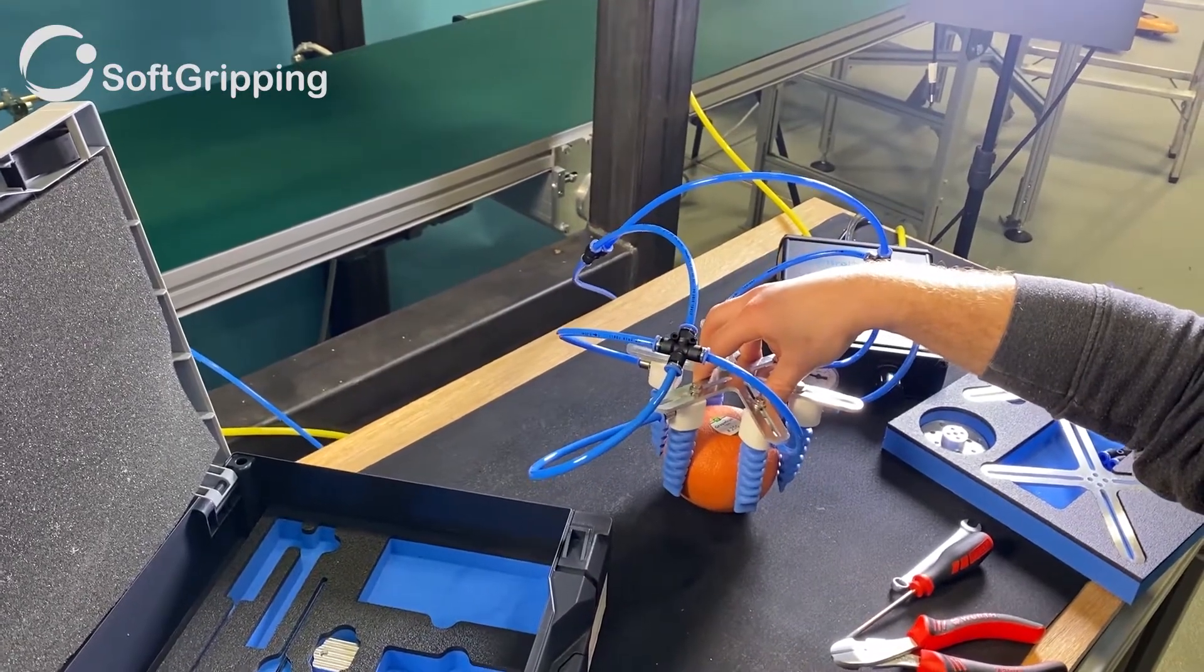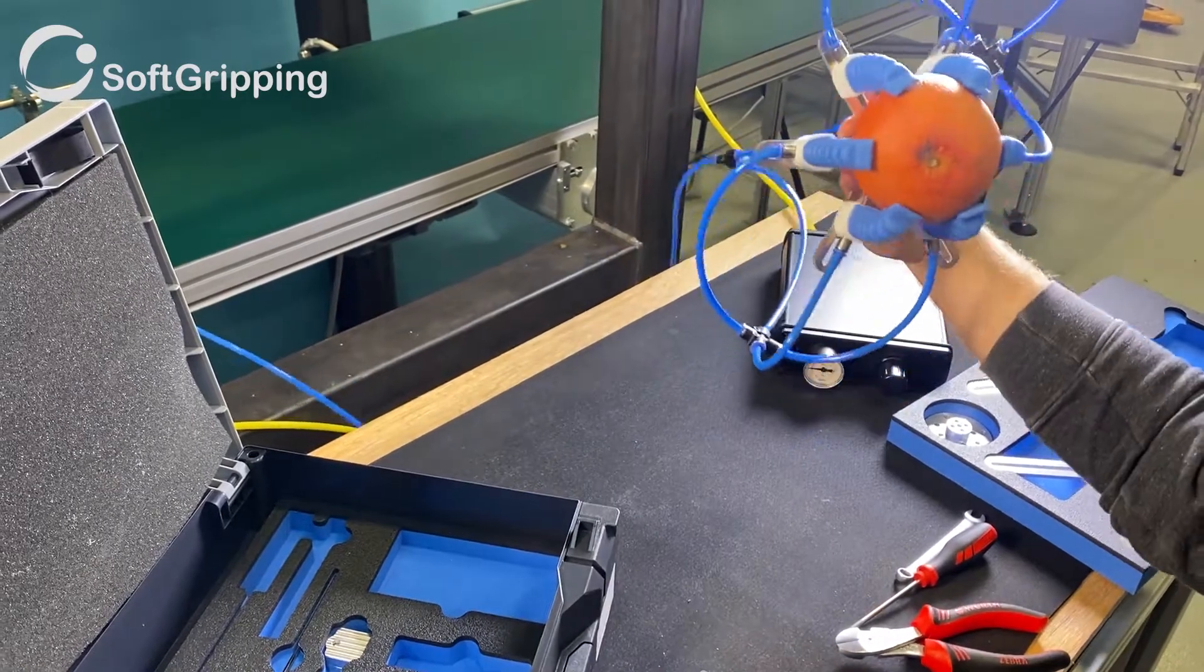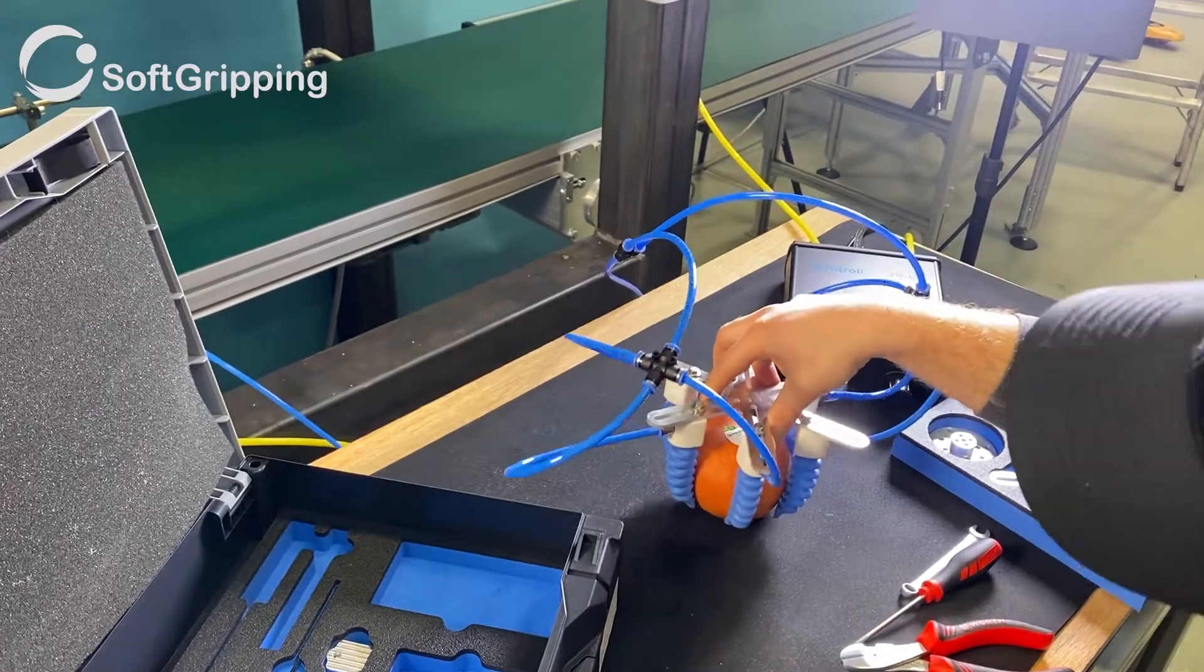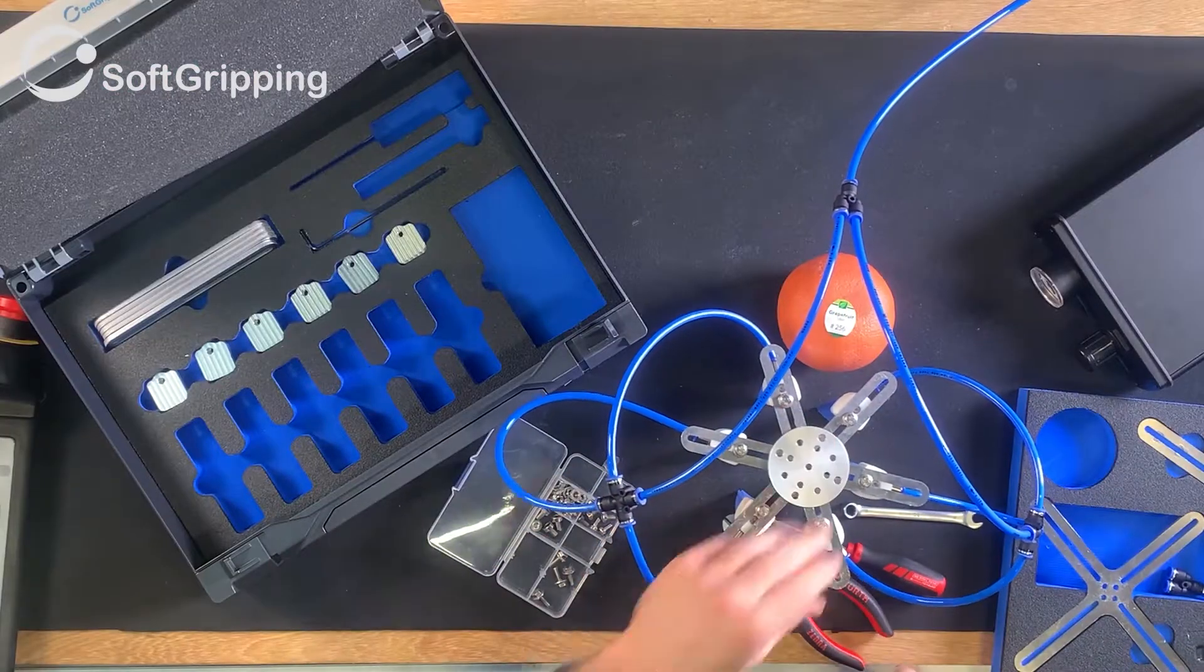The gripper fits the orange. Now it's time for the right flange adapter to be attached. There are many standard robot flanges on the market. Our adapter fits most of them. If you have a robot that doesn't have a standard flange, please let us know.